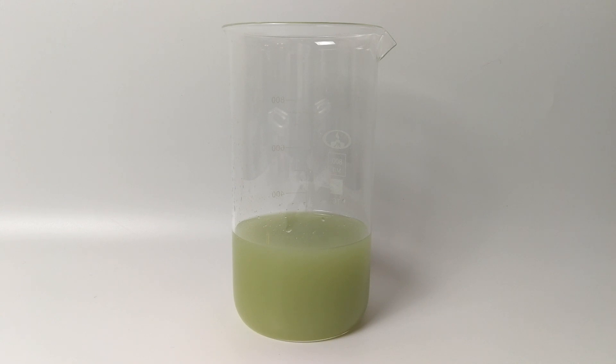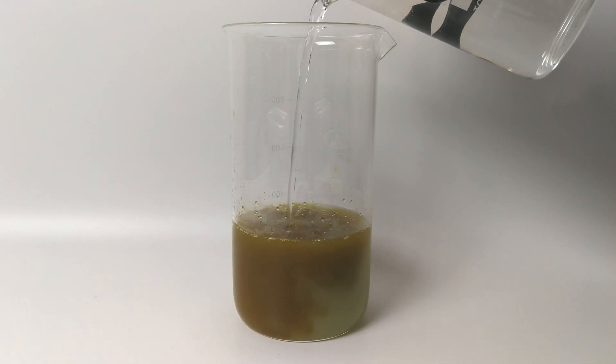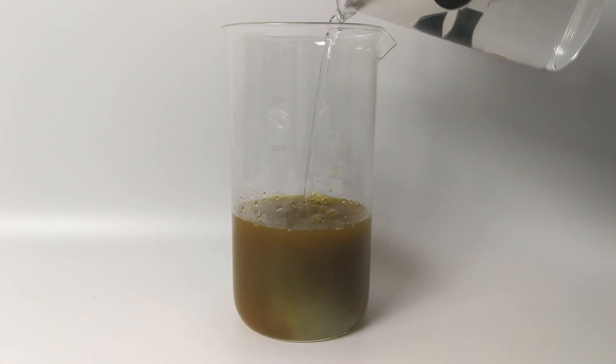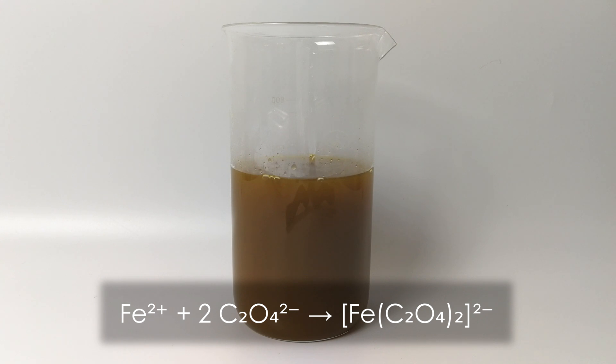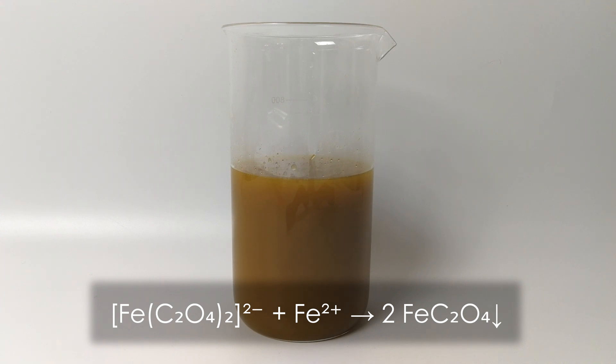Now, we can add our solution of oxalic acid to the solution of ferrous sulfate. The yellow solution of oxalic acid, in combination with the green solution of ferrous sulfate gives brown. The complex, however, is quickly destroyed and the solution turns yellow due to the precipitation of ferrous oxalate.